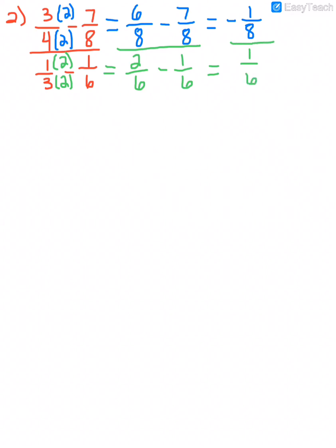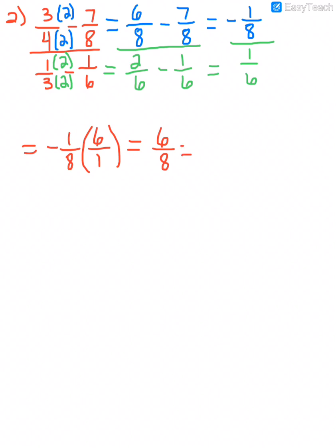Now I'm down to a single fraction divided by a single fraction — that was the goal. Once we have a single fraction divided by a single fraction, we take the top one and multiply it times the reciprocal of the bottom. So I take negative 1 over 8 and multiply it by the reciprocal of the denominator, which is 6 over 1. That gives me negative 6 over 8, which reduces to negative 3 over 4.